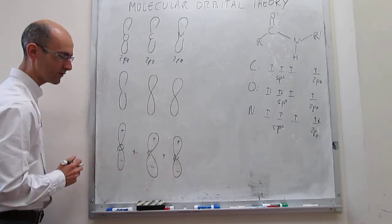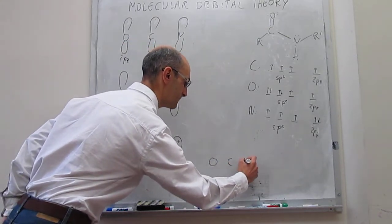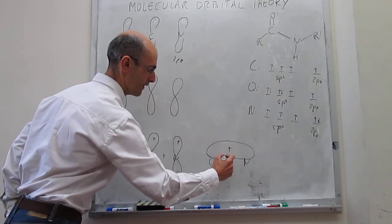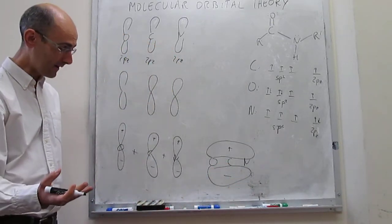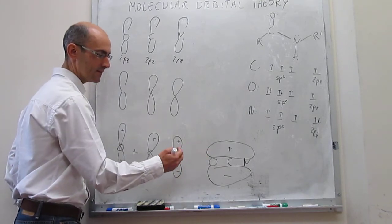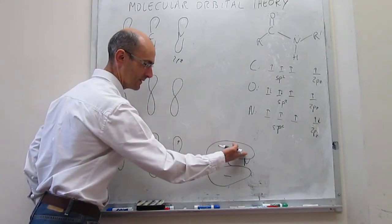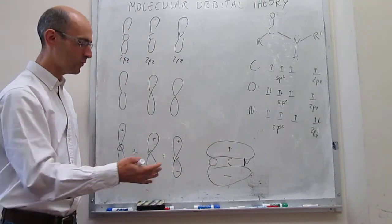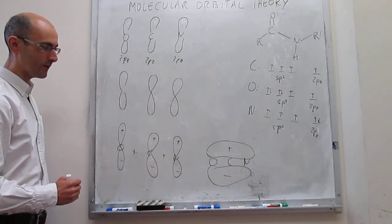The first linear combination has all three 2pc orbitals in phase — oxygen, carbon, and nitrogen all with the same phase. The resulting molecular orbital is a pi bonding orbital that extends across all three atoms, allowing electrons to reside between all three atoms simultaneously. This is clearly bonding and has the lowest energy of the three combinations.